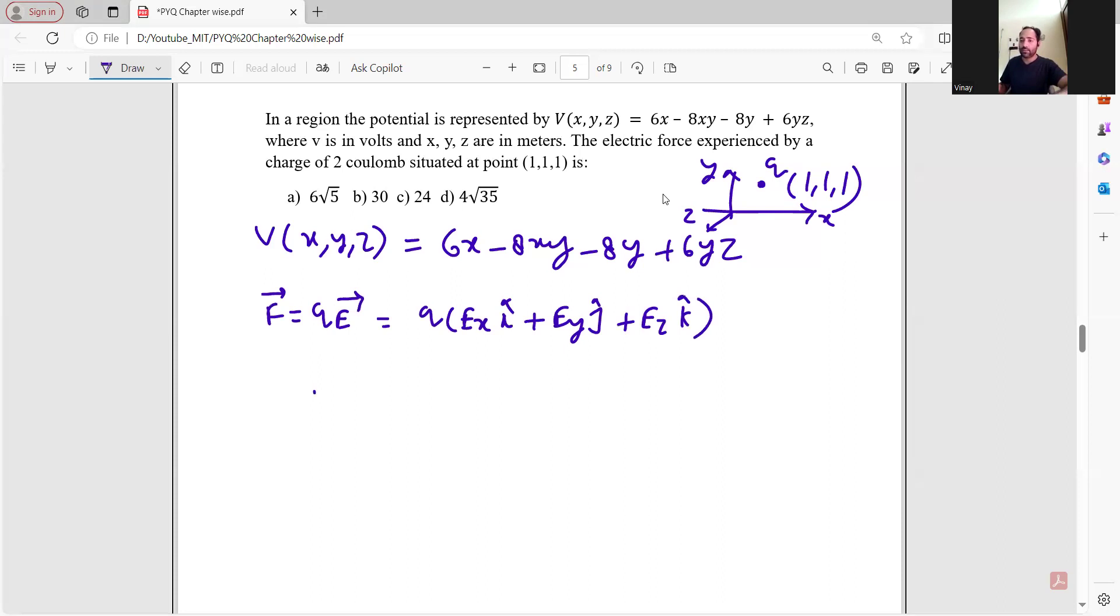Ex basically, you have studied this: E equals minus dV by dr. But when it comes to xyz, you stop thinking. Why minus sign? If the electric field is in this direction, the potential is reduced in the direction of electric field.